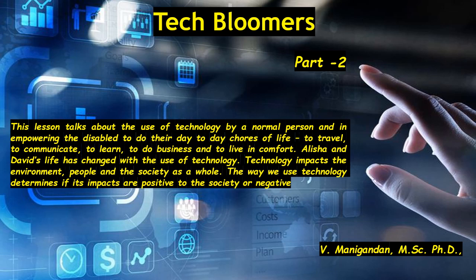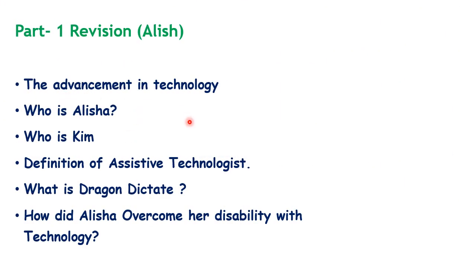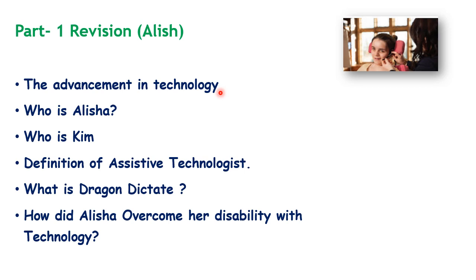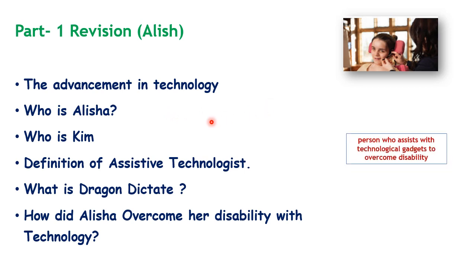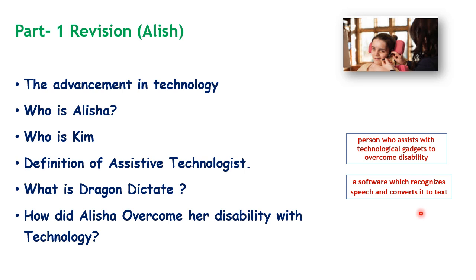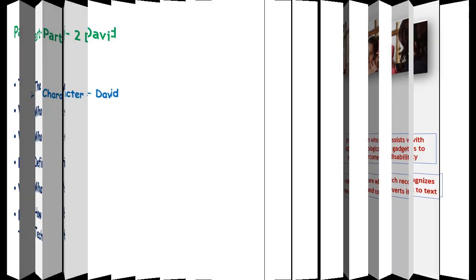As discussed in Part 1, this lesson and prose talks about the importance of technology and how it enabled disabled people to overcome their disabilities. In Part 1, we saw the advancement in technology, how it has made common people's lives easier, who Alicia is, who Kim is, the definition of assistive technologies, what Dragon Dictate is — a software that recognizes speech and converts it to text — and how Alicia overcame her disability with technology.